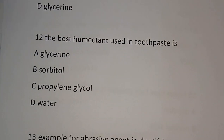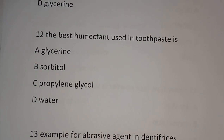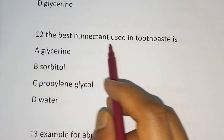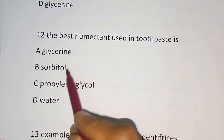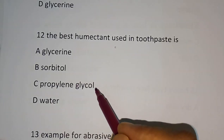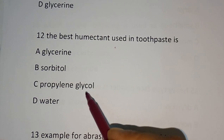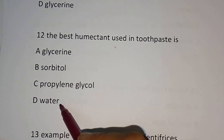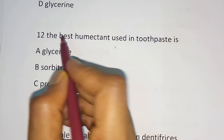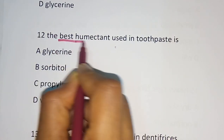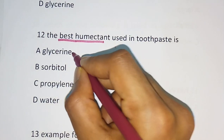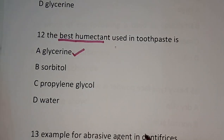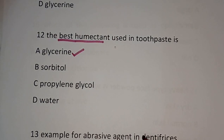Question number 12: The best humectant used in toothpaste — Glycerin, Sorbitol, Propylene glycol, or Water? The correct answer is Glycerin. Glycerin is the best humectant used in toothpaste.